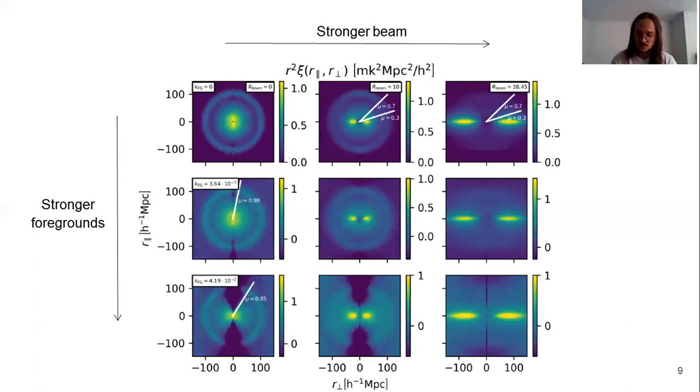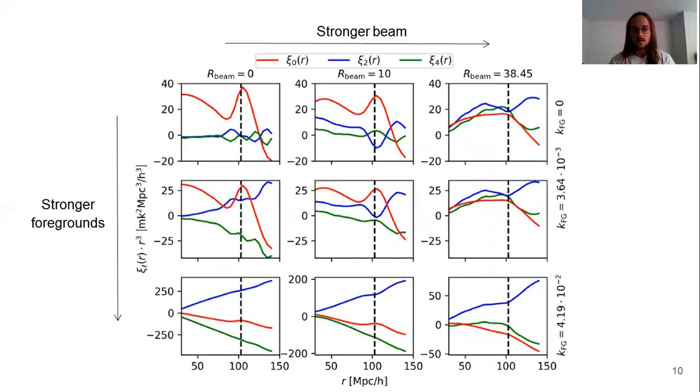We're going to start, for example, considering the multipoles, since they can manifest better the anisotropies of the signal induced by these observational effects. As we expect, in the top left, that is no observational effects, we have no anisotropies. That is the signal for the quadrupole and the hexadecapole is compatible with zero. And we are left with the monopole, that is the red line.